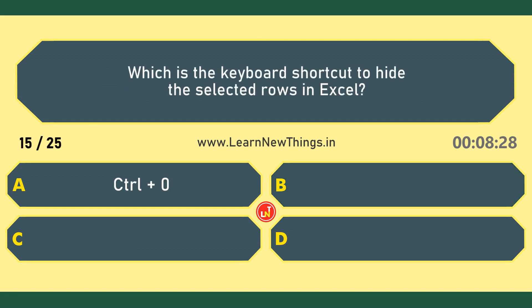Which is the keyboard shortcut to hide the selected rows in Excel? Ctrl-9.